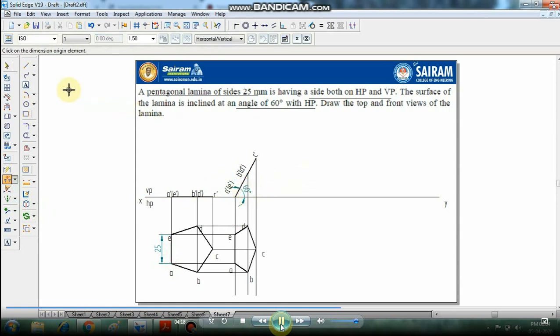The surface of the lamina rests both on HP and VP, so move this and keep this side EA on the reference line.